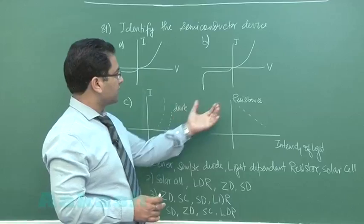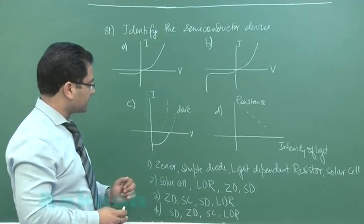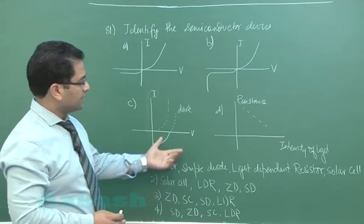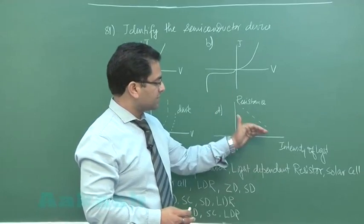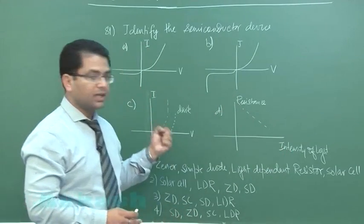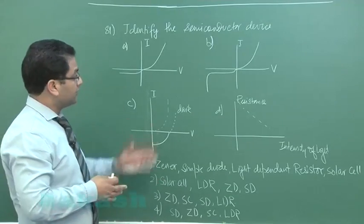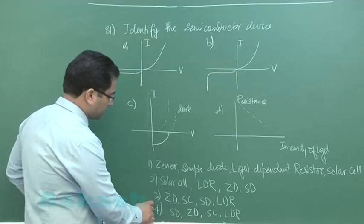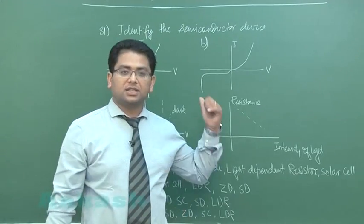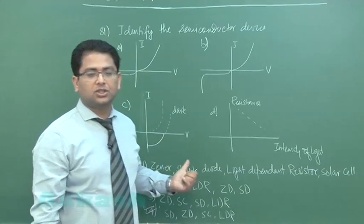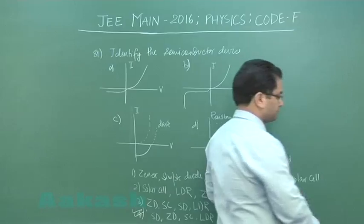Still, we can verify: this is a Zener diode in reverse breakdown mechanism, this is a solar cell, and this is a graph indicating the decrease in resistance with intensity of light, so it's a light dependent resistor. As I've already said, even just by seeing the first option, the question could have been solved. The answer is option number four. Question number 81 has that particular solution. Now let's move to question number 82.